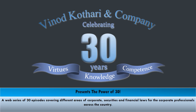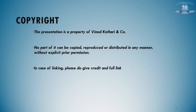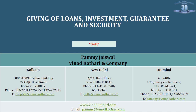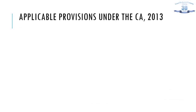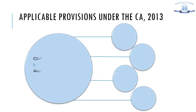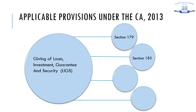Hello friends. As we move ahead with the celebrations of completing 30 years in practice at Vinod Kothari & Company, we again present to you a web lecture on the giving of loans, guarantee and security and making of investments. The applicable provisions under the Companies Act 2013 are Section 179, Section 185, Section 186 and 187 — the four sections that mainly deal with the topic of today's web lecture.